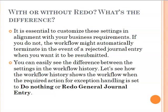What's the difference? It is essential to customize these settings in alignment with your business requirements. If you do not, the workflow might automatically terminate in the event of a rejected journal entry when you want it to be resubmitted. You can easily see the difference between the settings in the workflow history. Let's see how the workflow history shows the workflow when the required action for exception handling is set to do nothing or redo general journal entry.